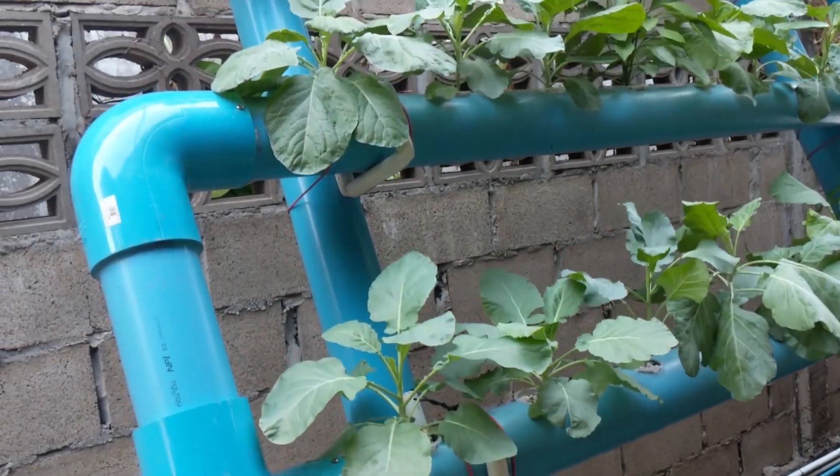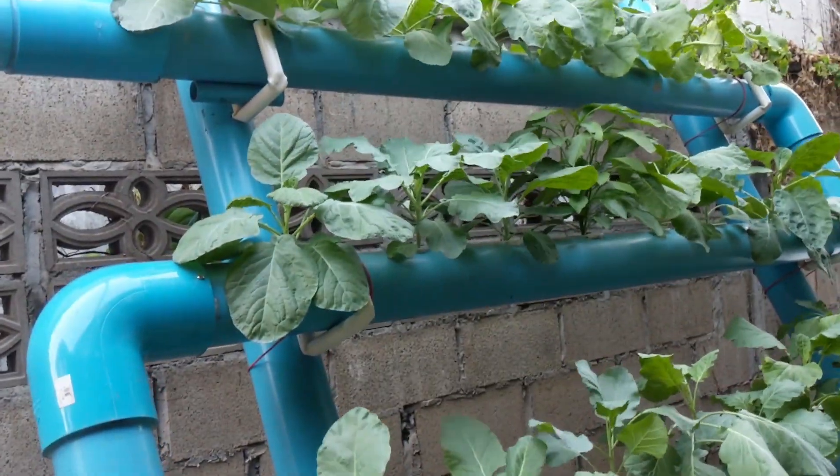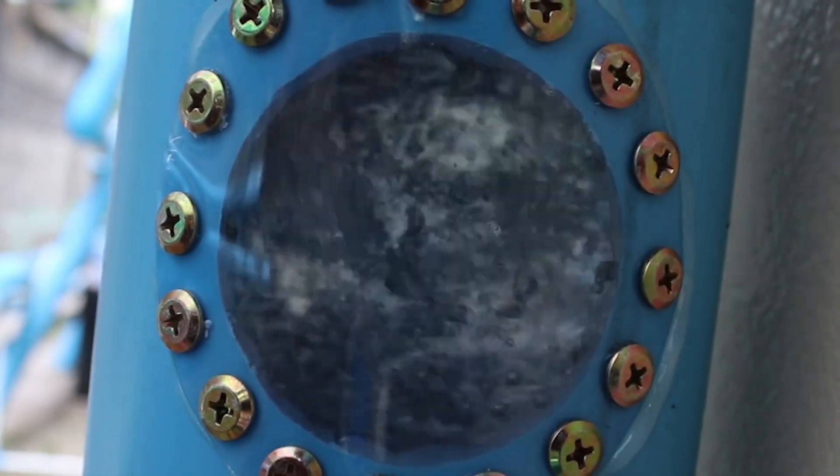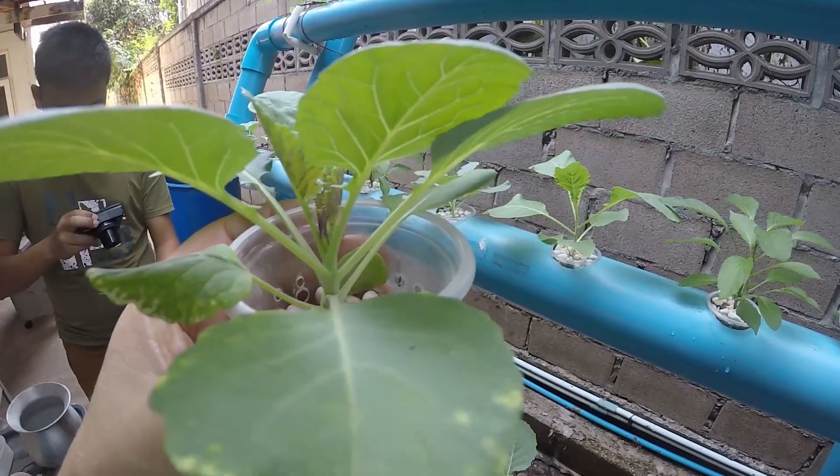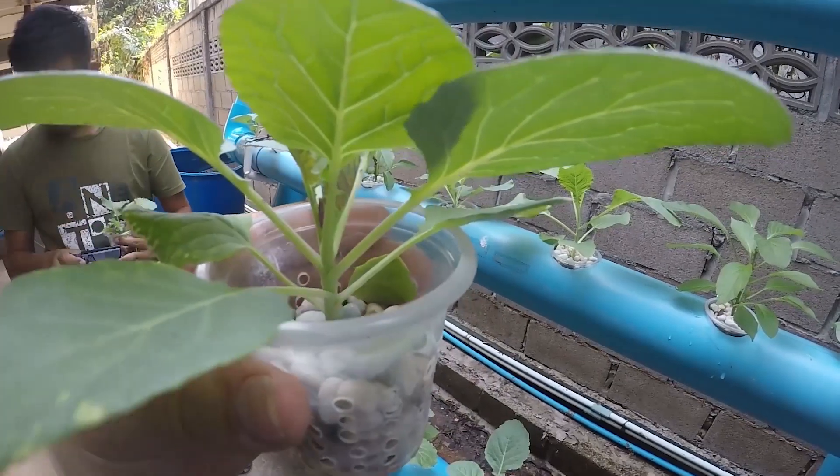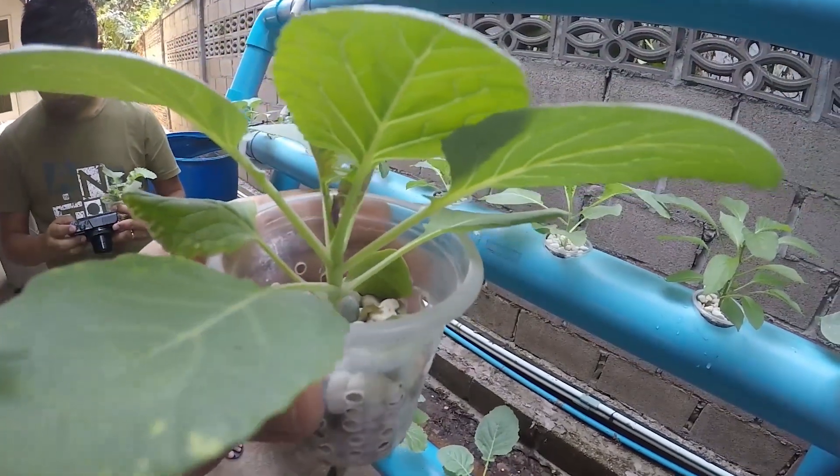Now that we know we can convert fresh chicken manure into safe, nutrient-rich hydroponic plant-growing solution, we want to make our system more efficient and cost-effective. The goals we've set for our Phase 2 prototype will be: